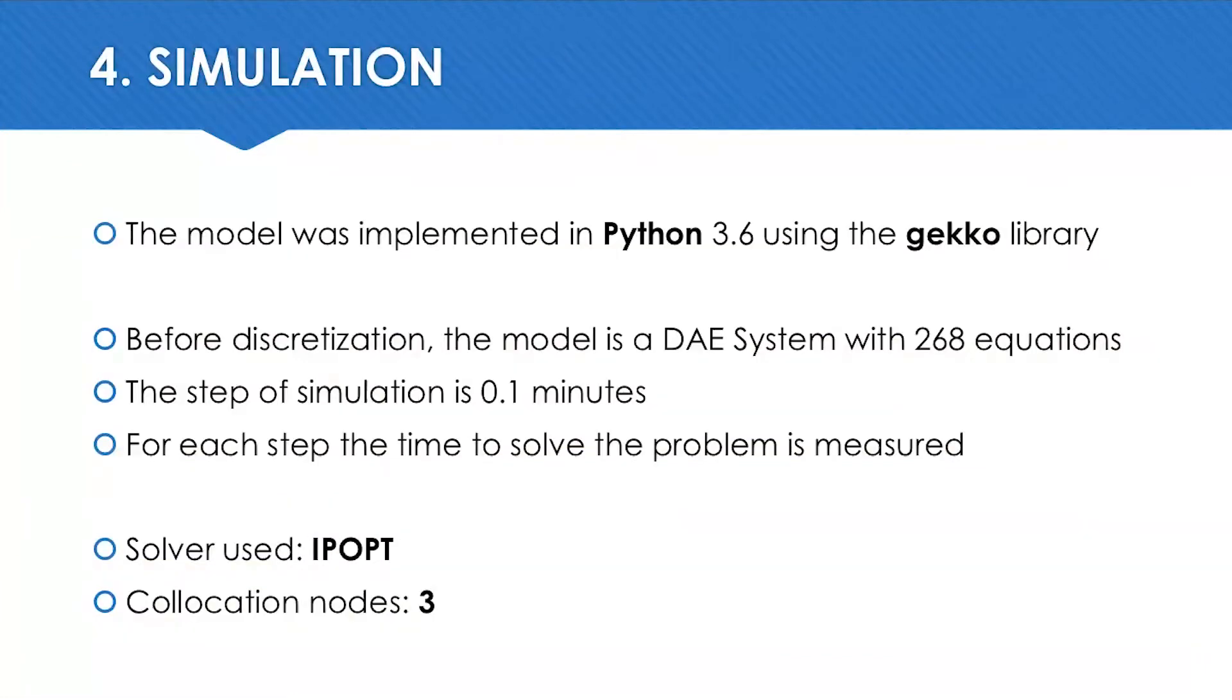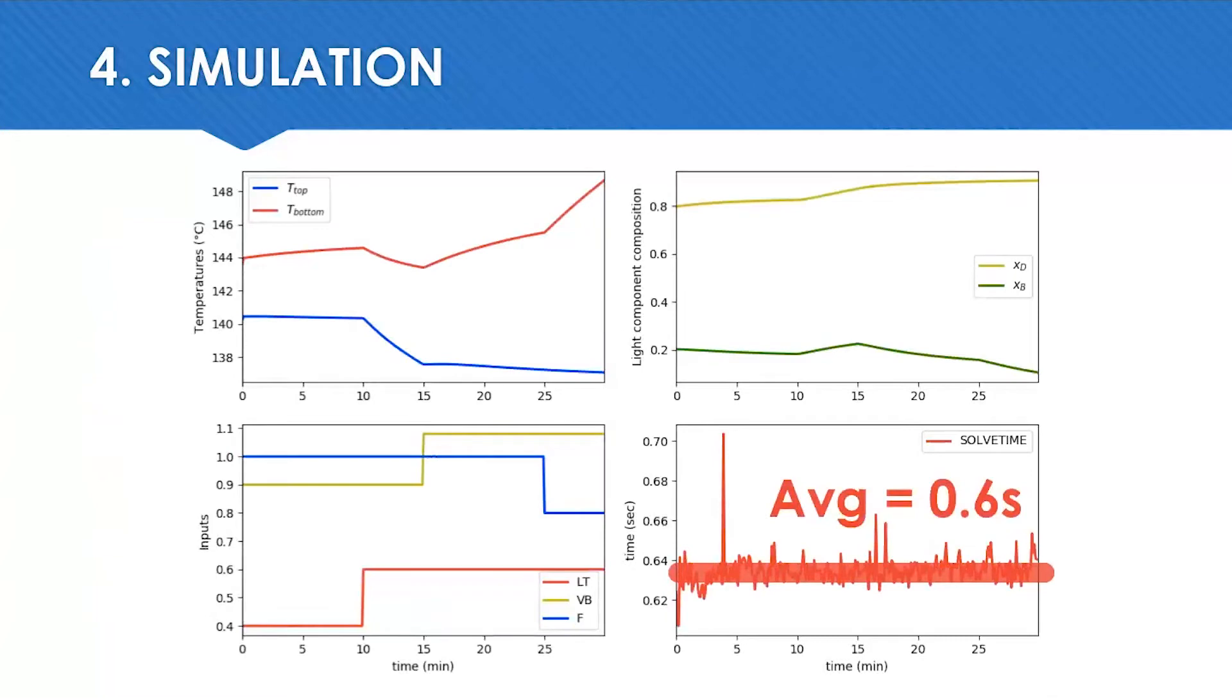For the simulation, the model was implemented in Python 3.6 using the Gekko library. Before discretization, the model is a differential-algebraic equation system with 268 equations. The step of simulation is 0.1 minutes. For each step, the time to solve the problem is measured. I used the IPOPT solver with three collocation nodes. Here we can see that the changes in the inputs and disturbances lead to changes in the control variables. On this simple dynamic simulation step, the average time to solve each cycle is about 0.6 seconds.